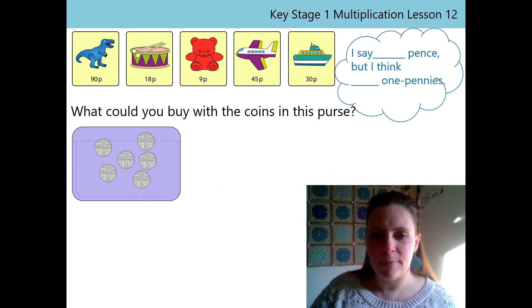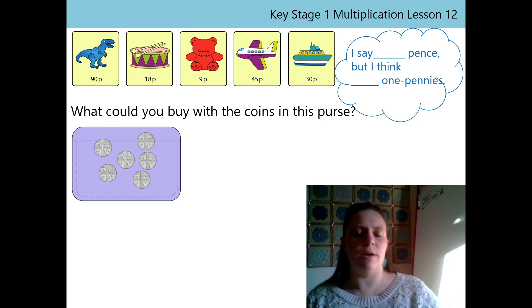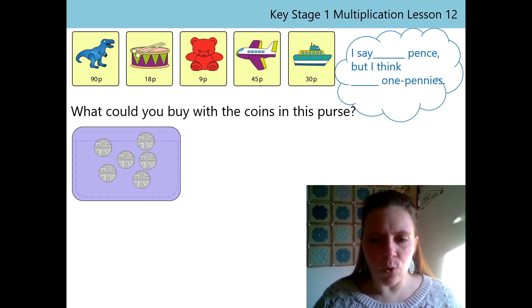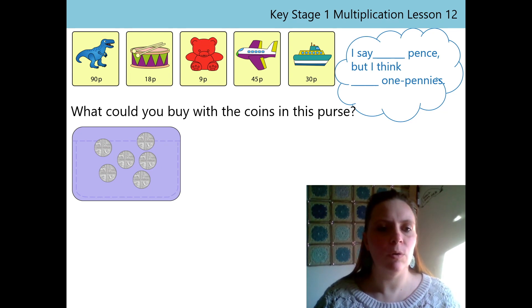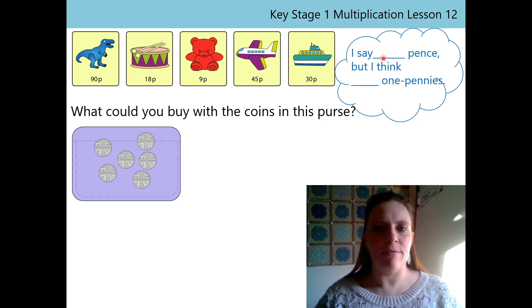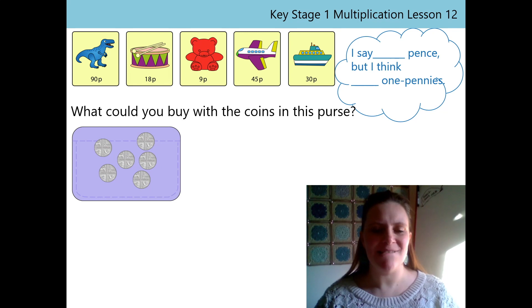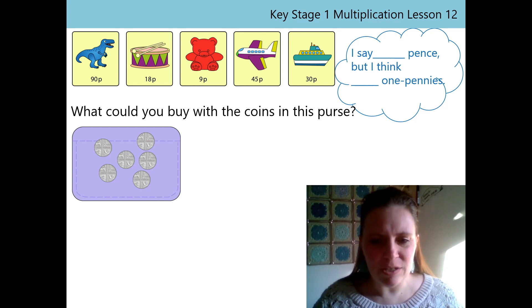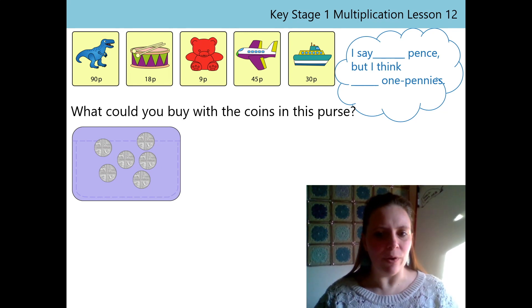I've got another purse here. And I want to find out what I can buy with this purse. Let me just check how many coins I've got. 1, 2, 3, 4, 5, 6. I've got 6 coins. But they're not 1p anymore, are they? No. They're 5p coins. I say 5p, but I think 5 one pennies.